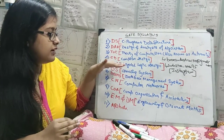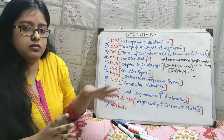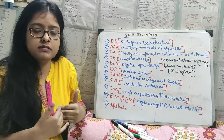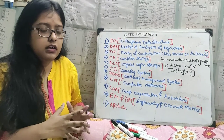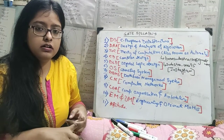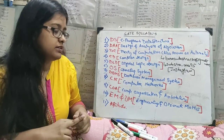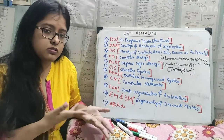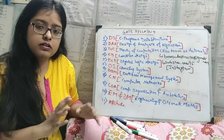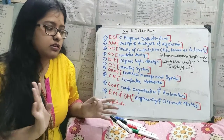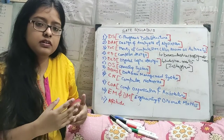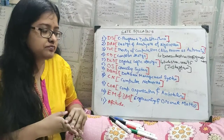Next is DLD — Digital Logic Design. In B.Tech, at least in my case, it was combined with analog electronics. Analog is not there in GATE, but digital is comparatively easier than all the rest of the subjects. It's scoring actually.